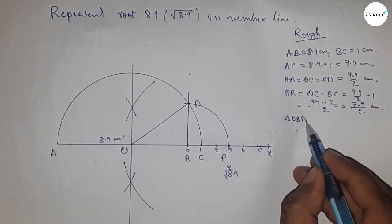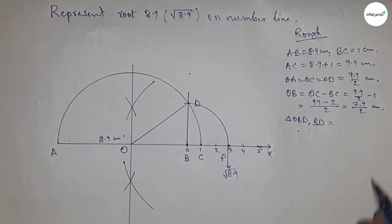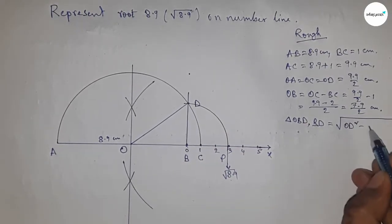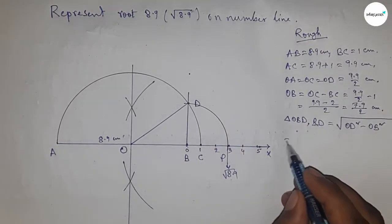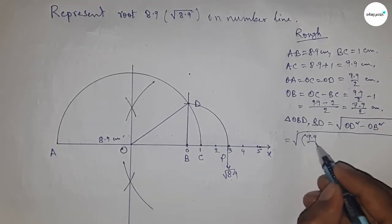Now from right angle triangle OBD, we can write BD equals, by Pythagorean theorem, root over OD squared minus OB squared. That's hypotenuse squared minus base squared. Now putting the value of OD and OB.